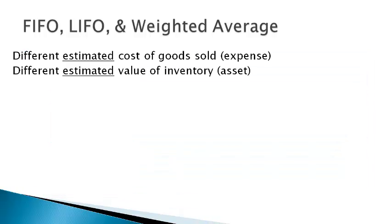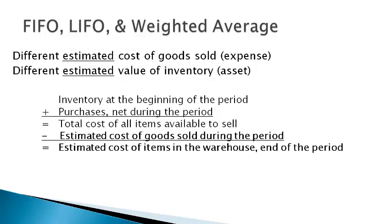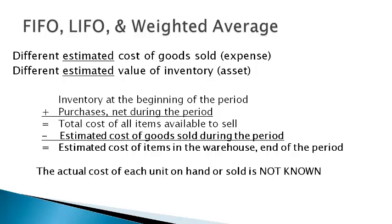Each of the methods used to value inventory gives a different estimated cost of goods sold, which is an expense, and a different estimated value of inventory, which is an asset. The total cost of all inventories available to sell during the period is either in the warehouse at the end of the period and reported as inventory, or is sold to customers and reported as cost of goods sold. When cost of goods sold changes, the ending inventory is different also. Remember that the three methods give an estimated value for ending inventory and cost of goods sold because the actual cost of each unit is not known.